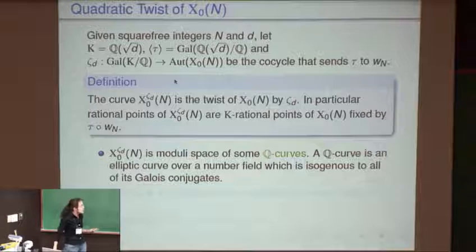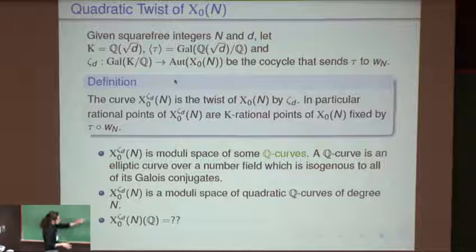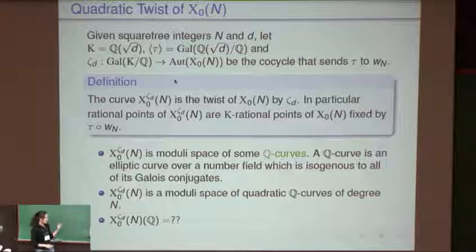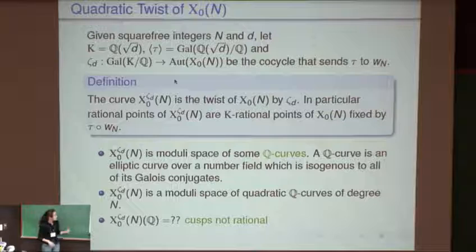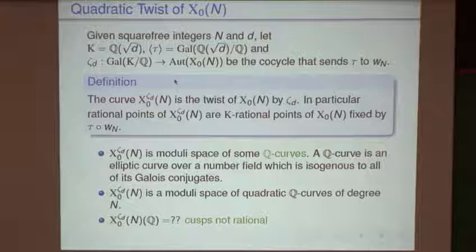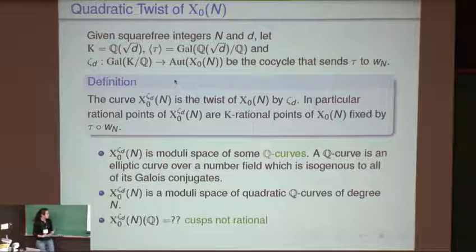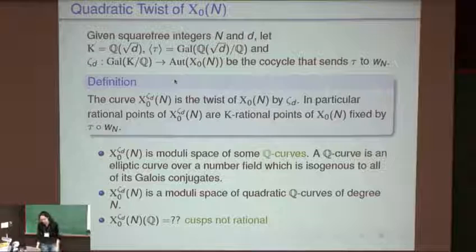You study the ramification or modularity questions about Q-curves in order to solve mixed-exponent Fermat equations. The rational points of the twisted curve are not immediately available: the cusps are no longer rational, because cusps are fixed by Galois conjugation but permuted by W_N, so they are not fixed by the composition. Therefore there are no natural rational points on these twisted curves — there is a genuine question to be answered.